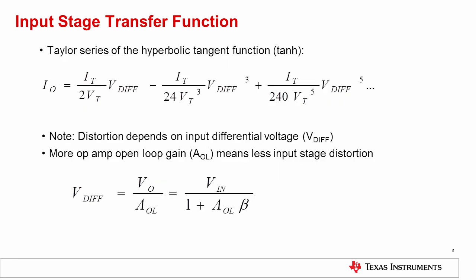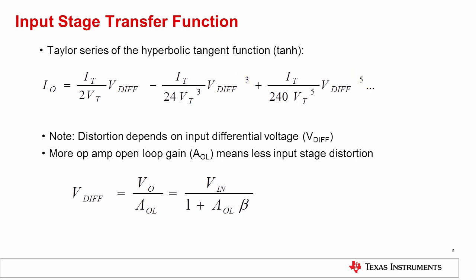We just showed that the input differential pair's transfer function is based on a hyperbolic tangent function. If we perform a Taylor series expansion on the input transfer function, we get the equation shown here. The first term in the Taylor expansion is the ideal linear small signal transfer function. In addition to this, we have a series of odd harmonics, denoted by odd exponents of 3 and 5. This series would continue infinitely, only containing odd harmonics. Notice that the harmonics all depend on the input differential voltage, meaning that a larger differential input will correspond to larger distortion terms. Thus, for low distortion operation of an op amp, we want a small differential input voltage.